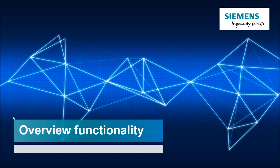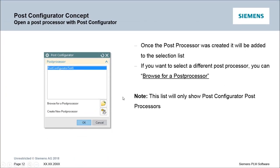Let's take a look at the overview functionality of PostConfigurator. In general, if you want to open an existing post or create a new post processor, you have a small dialog in NX. In this list you will only see PostConfigurator posts — for example, if a post is created you will also see it directly here in the list. This list will only show PostConfigurator post processors, not PostBuilder posts.